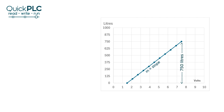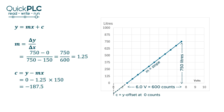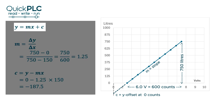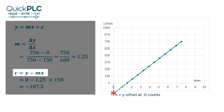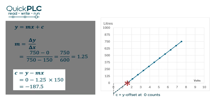The gain is the slope of the line — how many liters per count — and the offset is where the line intersects the y-axis. Going back to the linear equation y = mx + c: m is the slope, so that's 750 liters divided by 600 counts (remembering that 6 volts converts to 600 counts), giving us a gain of 1.25. To calculate where the line intersects the y-axis, we use c = y − mx, which gives us minus 187.5.